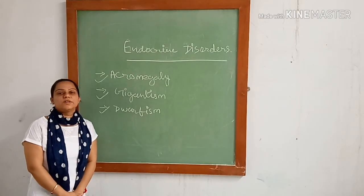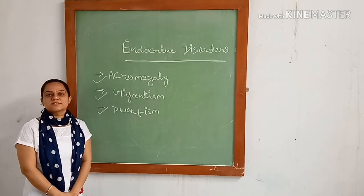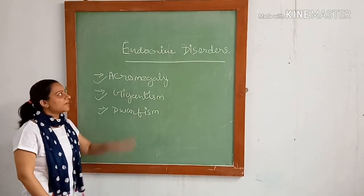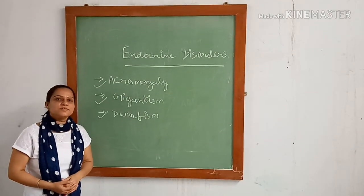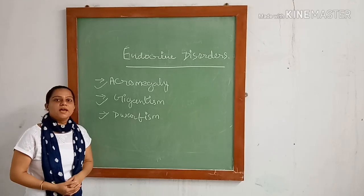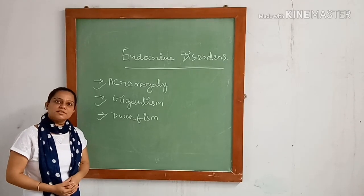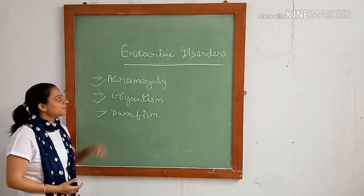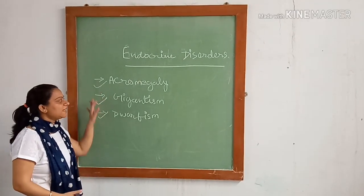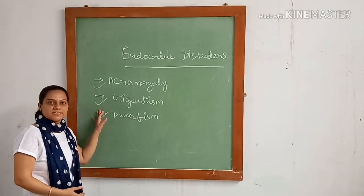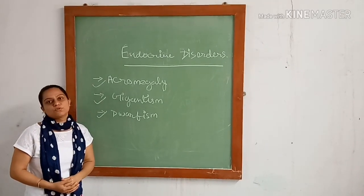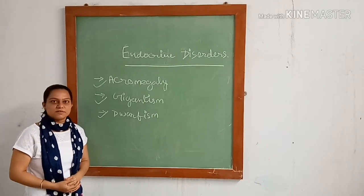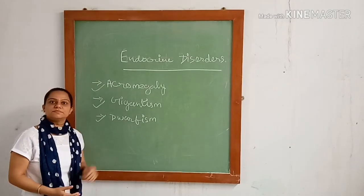Hello everyone, today we are going to discuss endocrine disorders related to growth hormone secretion. Hypersecretion of growth hormone results in acromegaly and gigantism, while hyposecretion of growth hormone results in dwarfism.